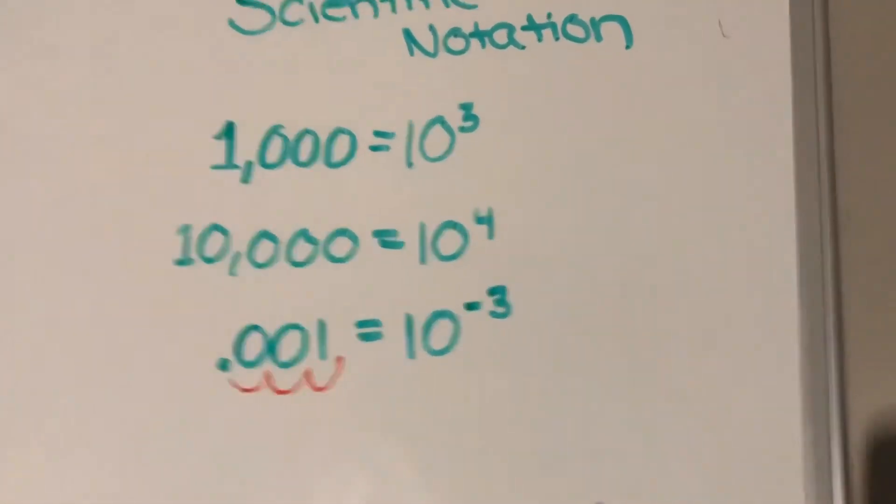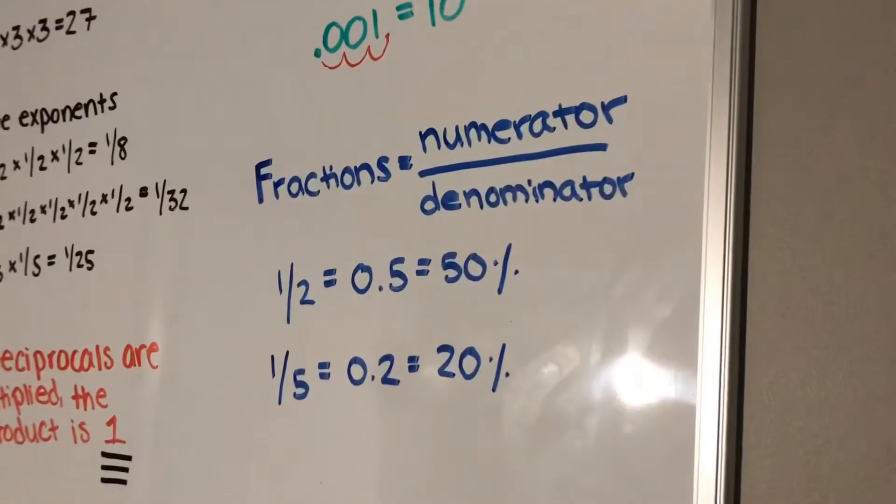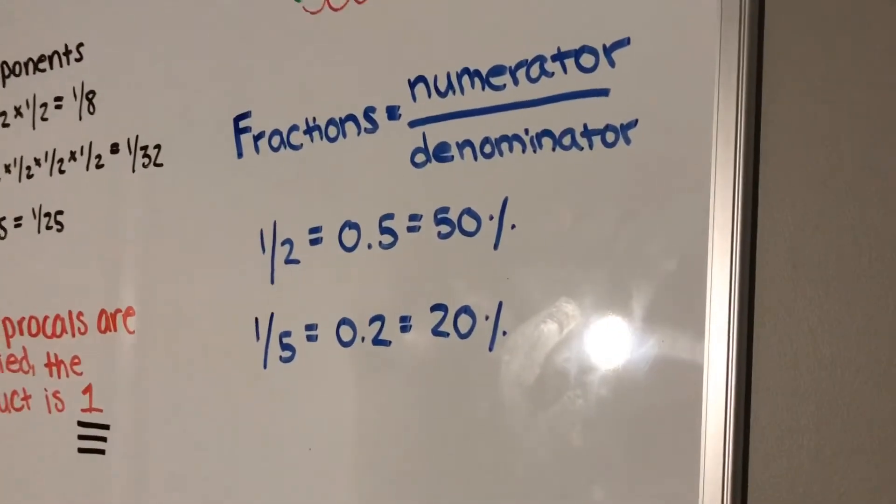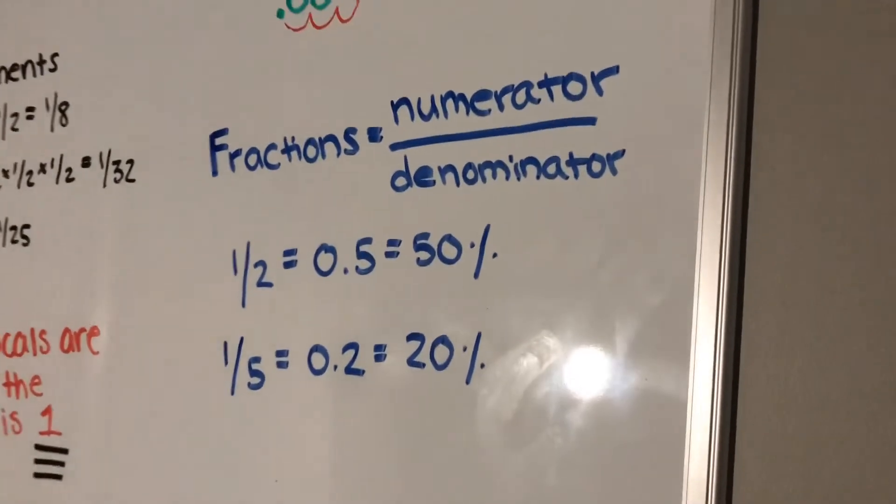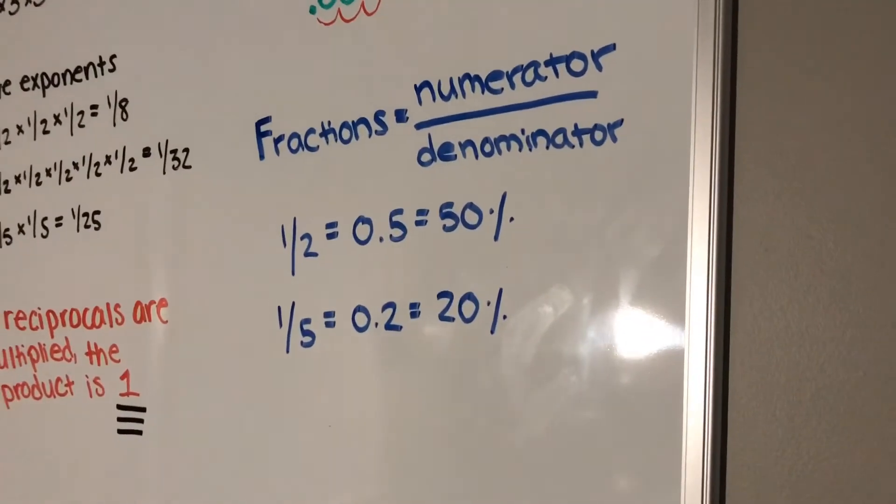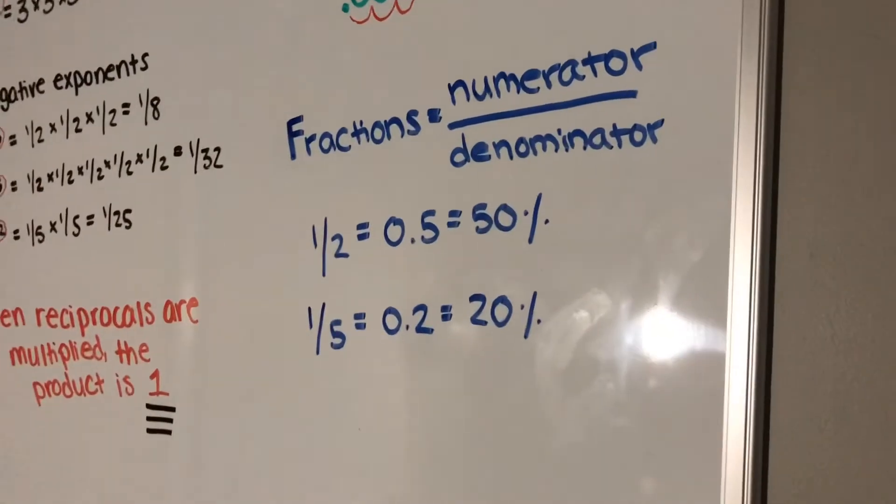Fractions equal the numerator over the denominator, so if you can have something in fraction form, you should be able to convert it into a decimal, and you should be able to convert that into a percentage, and vice versa.